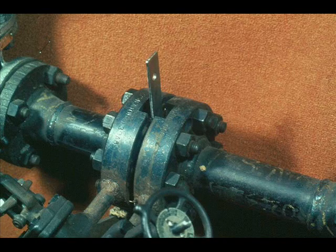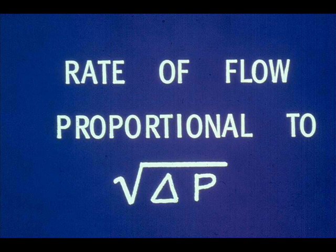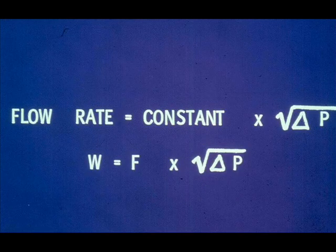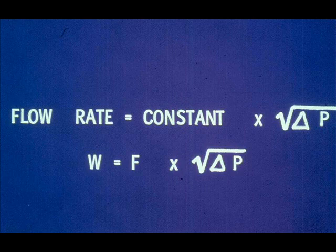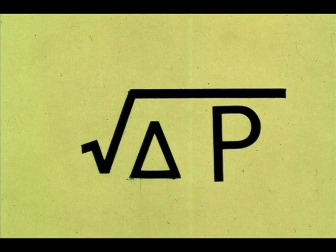For every particular orifice installation, the rate of flow can be calculated for any pressure drop or delta P measured by the meter. The rate of flow is proportional to the square root of the delta P. Expressed mathematically, the flow rate W equals a constant F multiplied by the square root of the delta P. The constant F can be determined for an orifice installation and is called the meter constant. Taking the square root of every measured delta P is time-consuming, so the meter scale is constructed to read the square root directly.